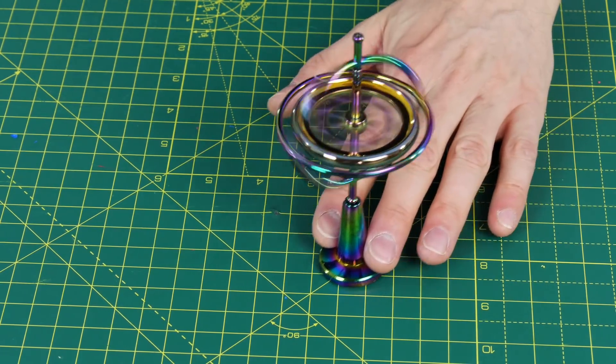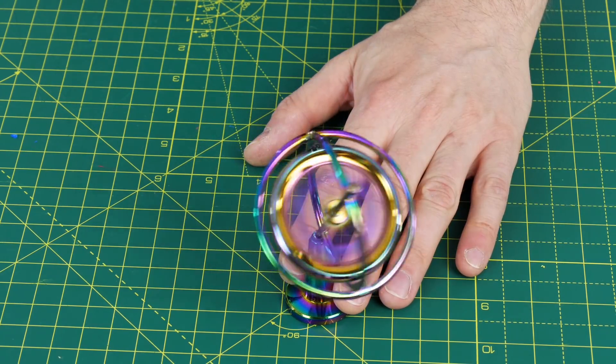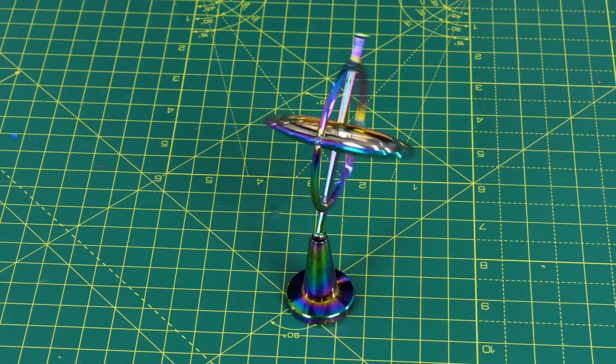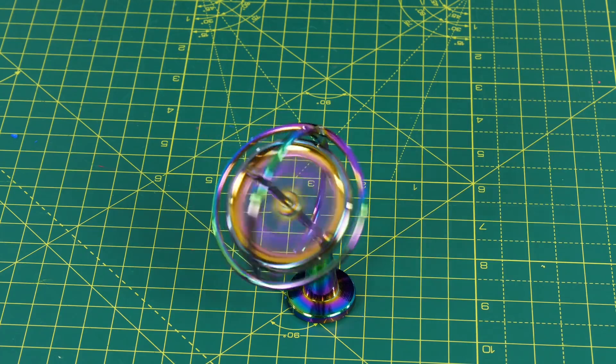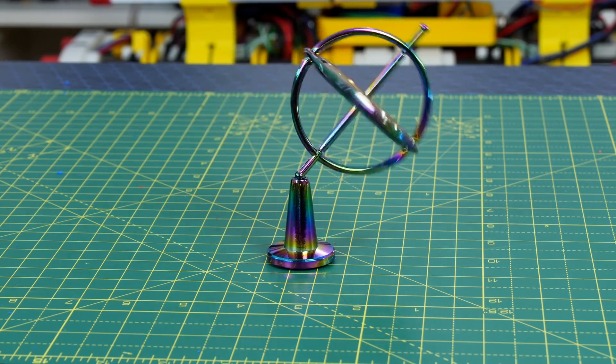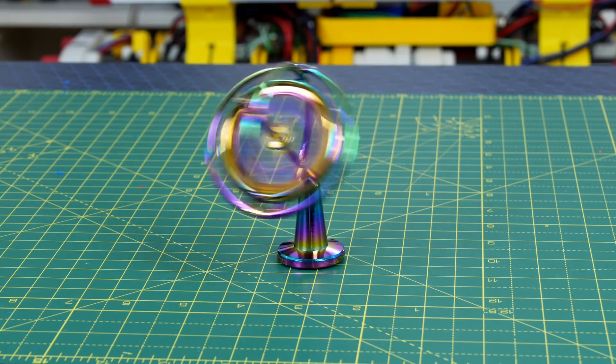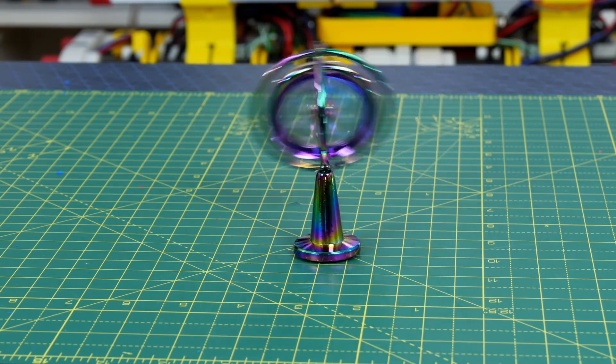But what happens if we try to push the gyro off balance? We can see that it still seems to defy gravity but it goes around and around in the direction that the gyro is spinning. As the gyro slows down it leans over more and more but it still goes around in the direction it's spinning until it doesn't have enough momentum anymore and it just falls over.